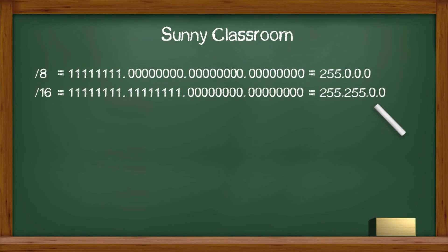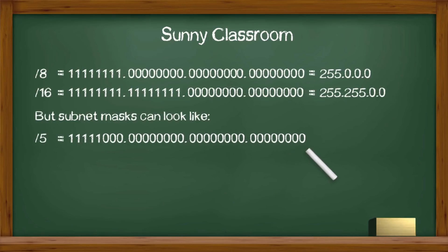But subnet masks are not necessarily of either 255 or 0. They can look like this. Slash 5 in shorthand means the subnet mask has 5 ones, the rest are zeros. And in decimal format, it is 248.0.0.0.